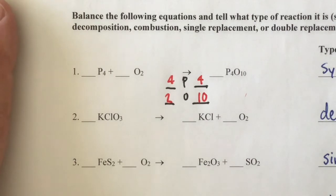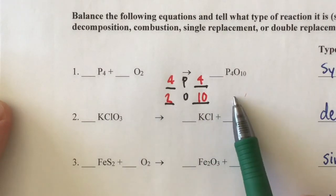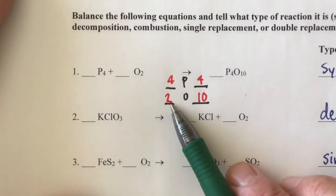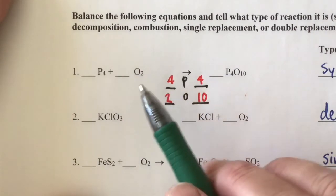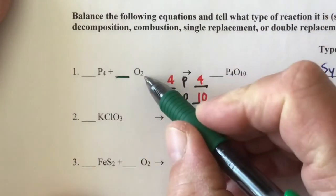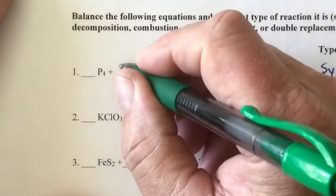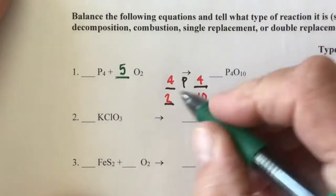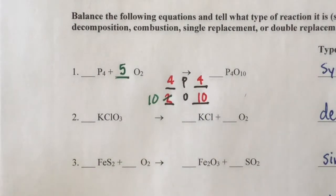Phosphorus is balanced; oxygen is not. We need ten oxygens on the reactant side, so we put a coefficient that multiplies by 2 to equal 10. What times 2 equals 10? That's right, 5. We put a 5 there, that changes the count to 10, and we are balanced.